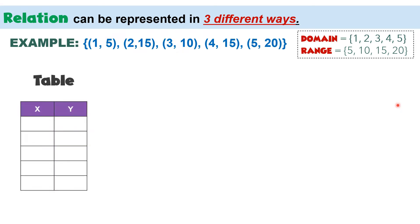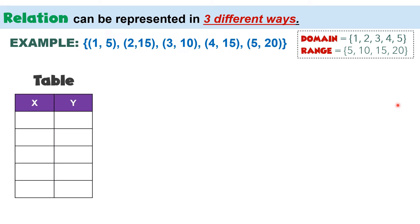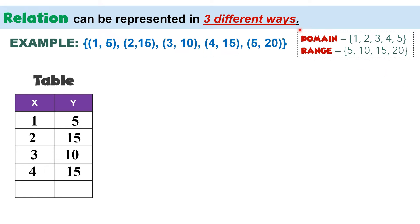The first way is using a table. This table contains two columns for x and for y. The x values are the first coordinates or the domain, and the y values are the second coordinates or elements of the range. So we have (1,5), (2,15), (3,10), (4,15), and (5,20). This is how we present relation using a table of values.